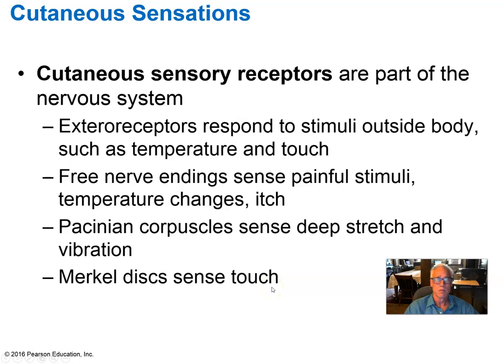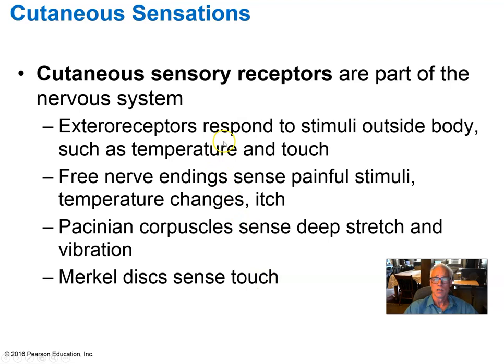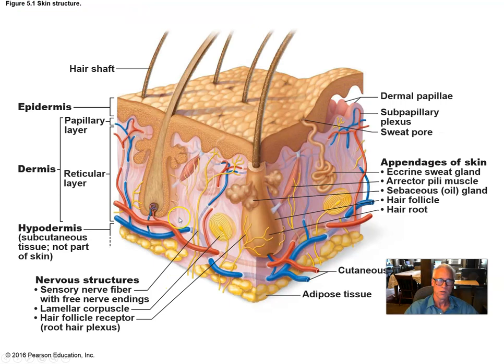There are sensory receptors in the dermis and even in the epidermis. Free nerve endings in the papillary dermis transduce pain, temperature changes, and itch-causing sensations. Pacinian corpuscles are layered onion-like structures in the deep reticular dermis that sense deep stretch and vibration. Merkel discs in the basal layer of the epidermis, in conjunction with modified dendrites of neurons in the dermis, form sensitive touch receptors.